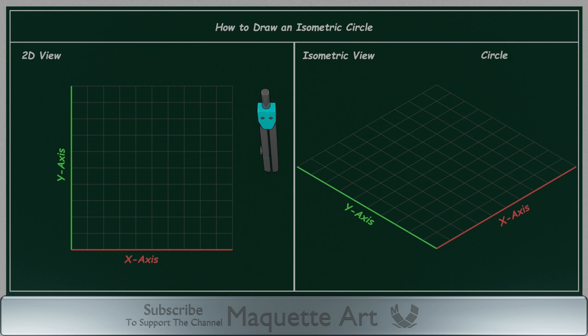Let's draw a circle of diameter 4 cm. First draw a square 4 by 4 cm. Now divide this square into 4 parts like this. In the 2D view, all the interior angles of the square are 90 degrees.